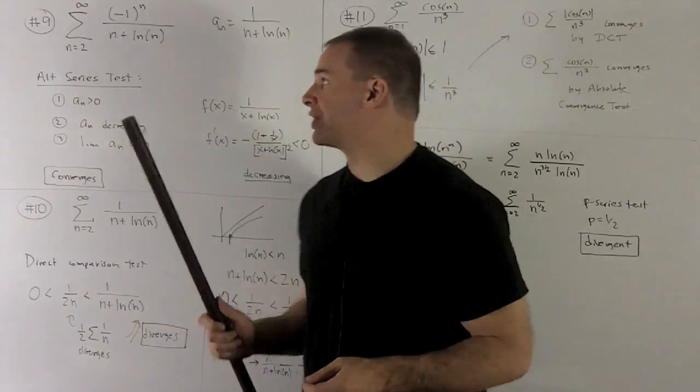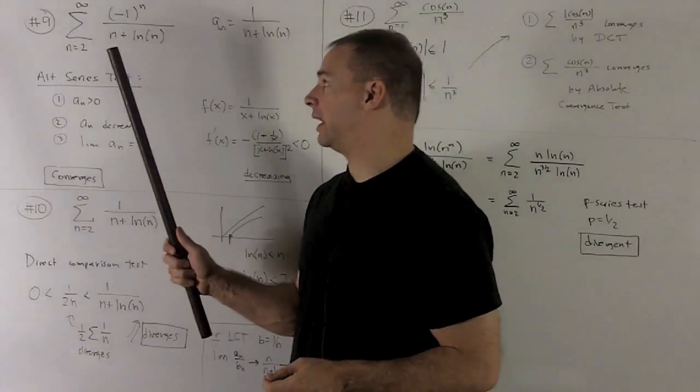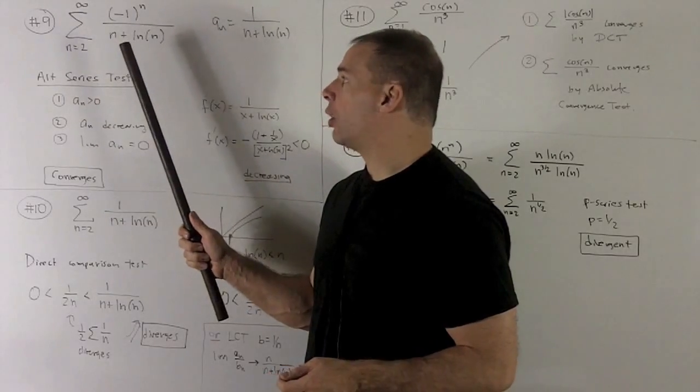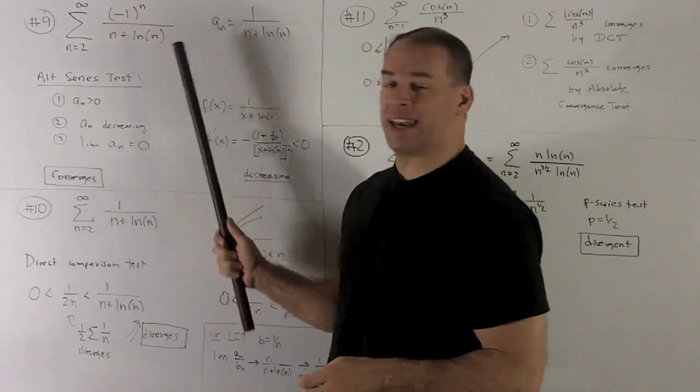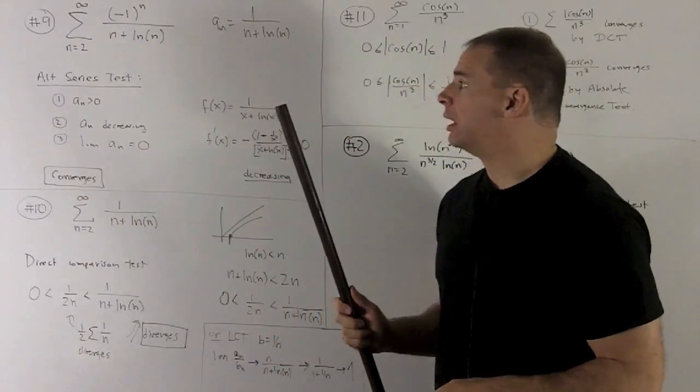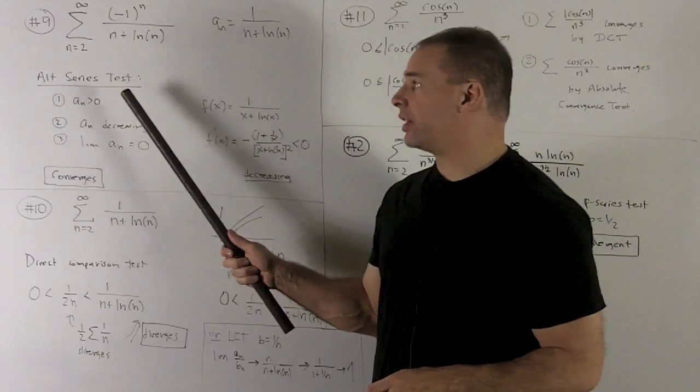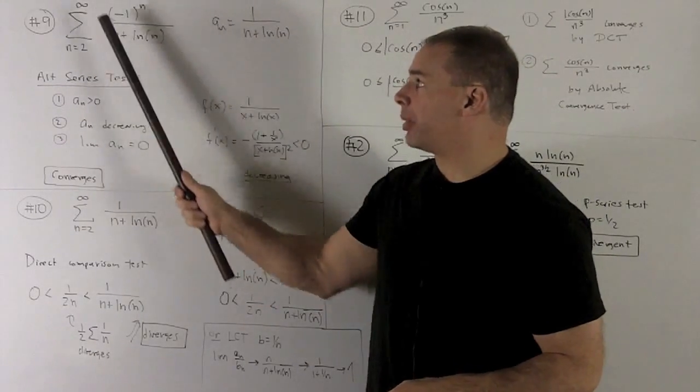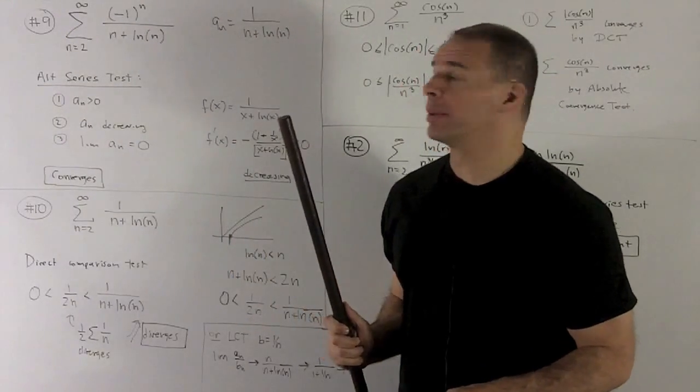Number 9, consider the sum n going from 2 to infinity, minus 1 to the n over n plus natural log of n. Here we're looking at an alternating series, so the tip-off is the minus 1 to the n up in top.